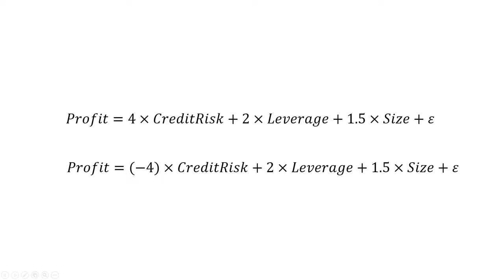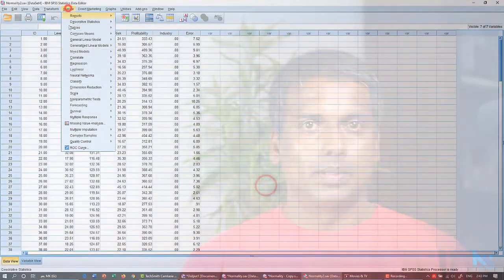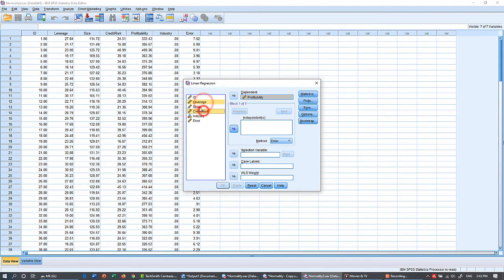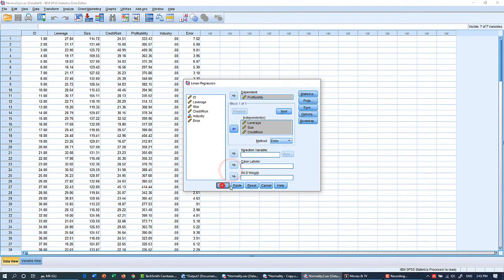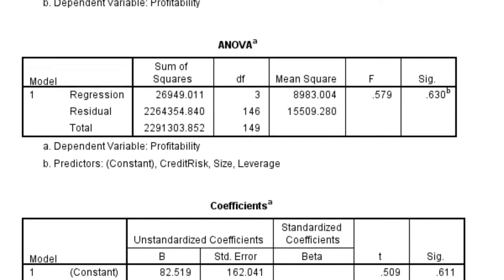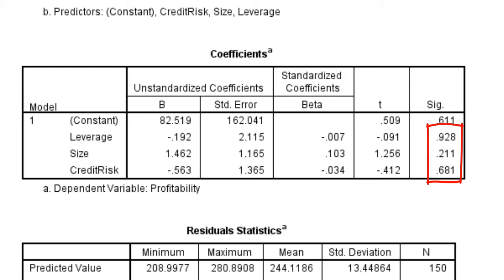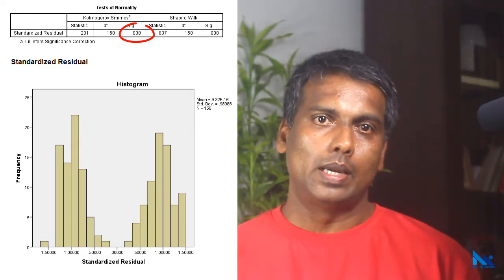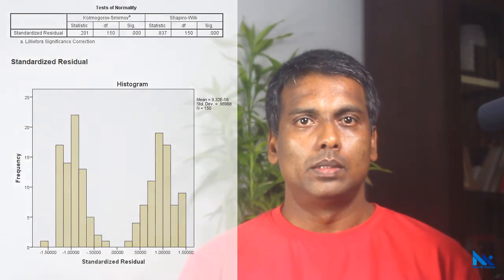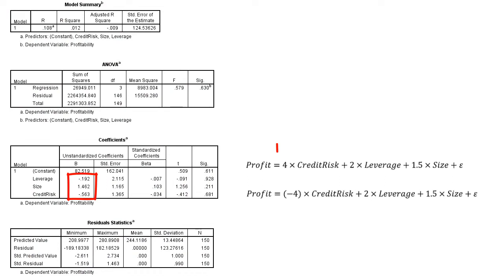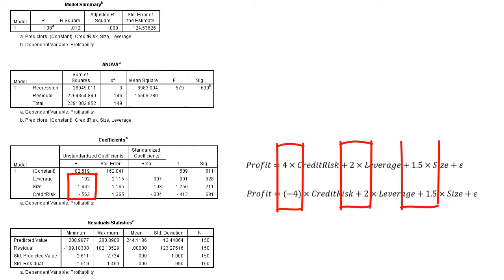In practical situations we do not know such information. If I run the regression without knowing the existence of these different relationships for two hidden groups in the dataset, I can observe that the overall regression model is not statistically significant and none of the coefficients are significant. Moreover, both the histogram and normality tests reveal that the residuals are not normally distributed. This implies that the estimated coefficients and other statistics can be misleading since one of the assumptions has not been met, and the estimated regression coefficients are not even close to the expected values.